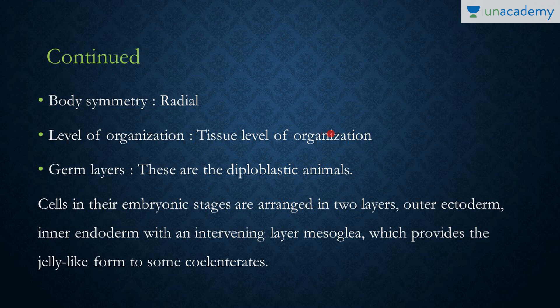The level of organization is tissue level, which means that the cells are organized into tissues. The germ layers — these are diploblastic — that is, they only have an ectoderm and endoderm. That is two layers in the embryonic stage: an outer ectoderm and an inner endoderm, with an intervening layer of mesoglea, which helps in forming the jelly-like form — as you guessed it, like in jellyfish.